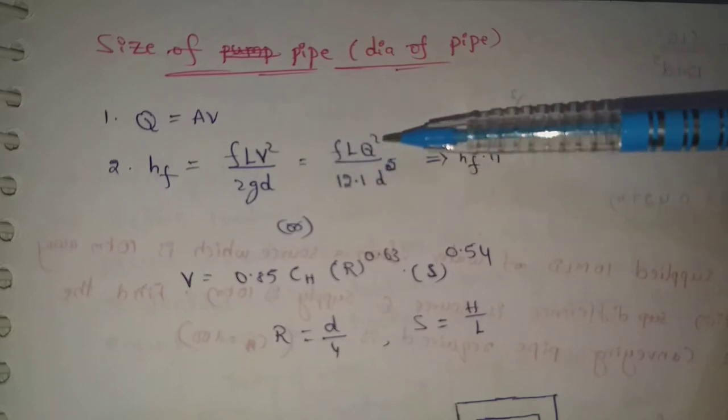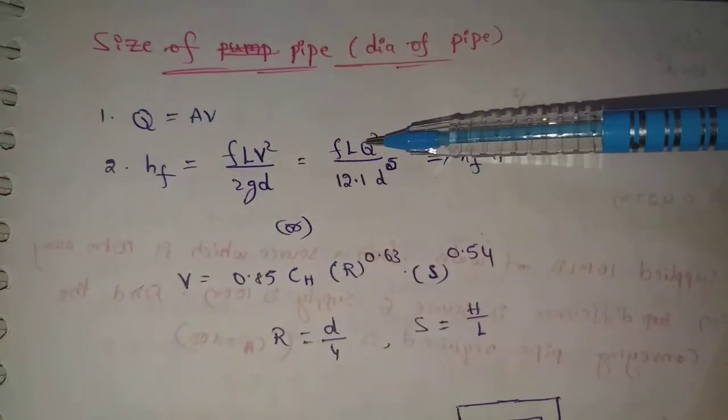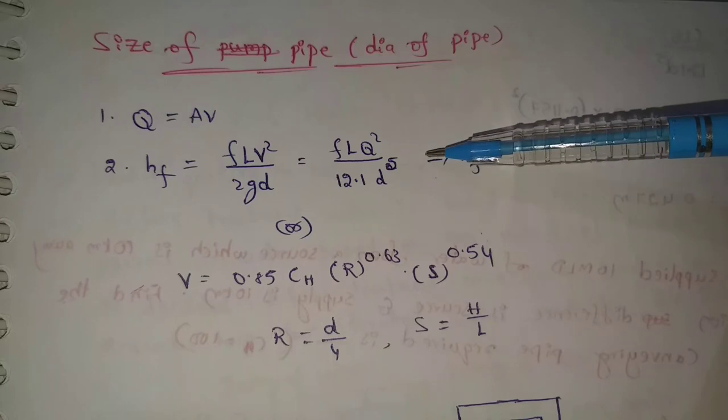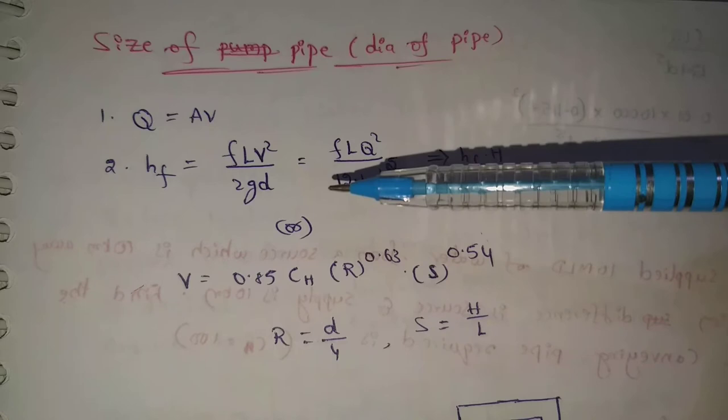fLV squared by 2gd equals fL Q squared. So Q equals AV, and we can derive fL Q squared by 12.1 d to the power 5.